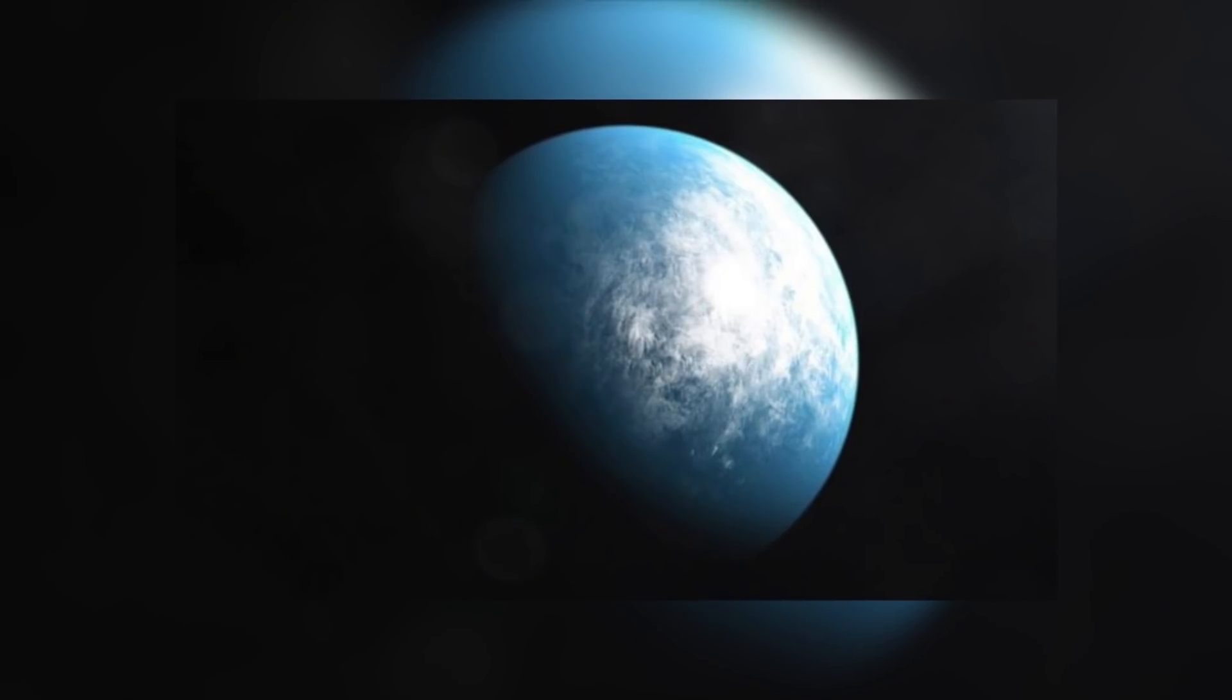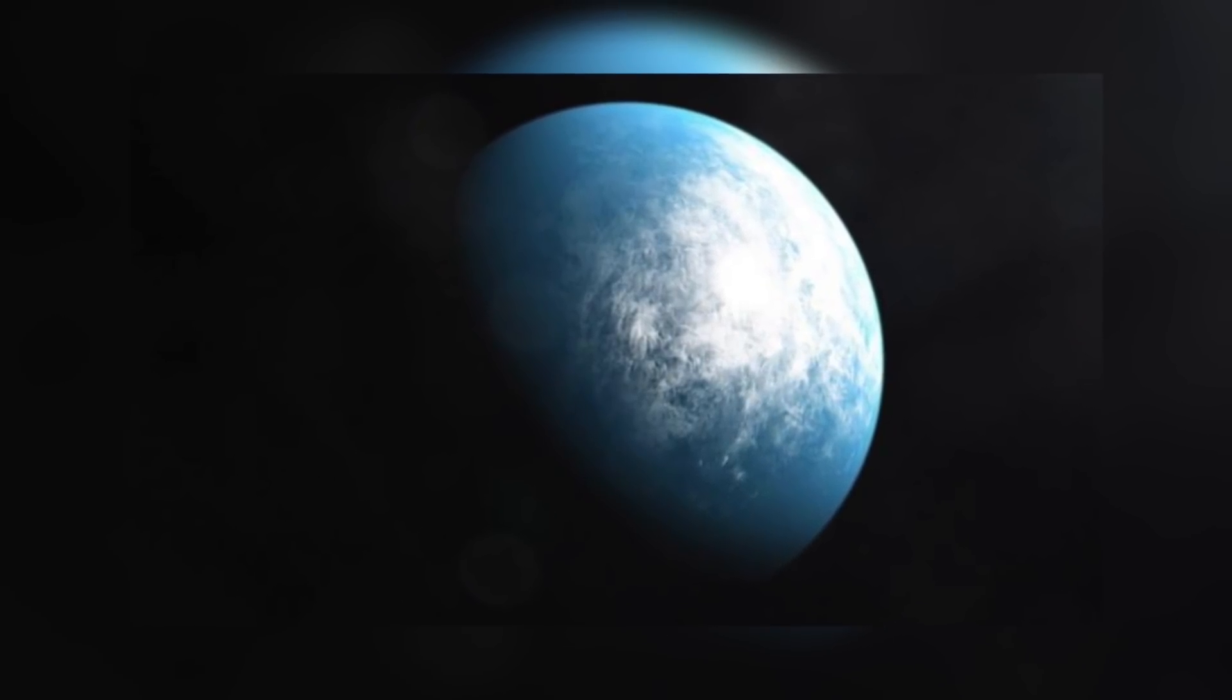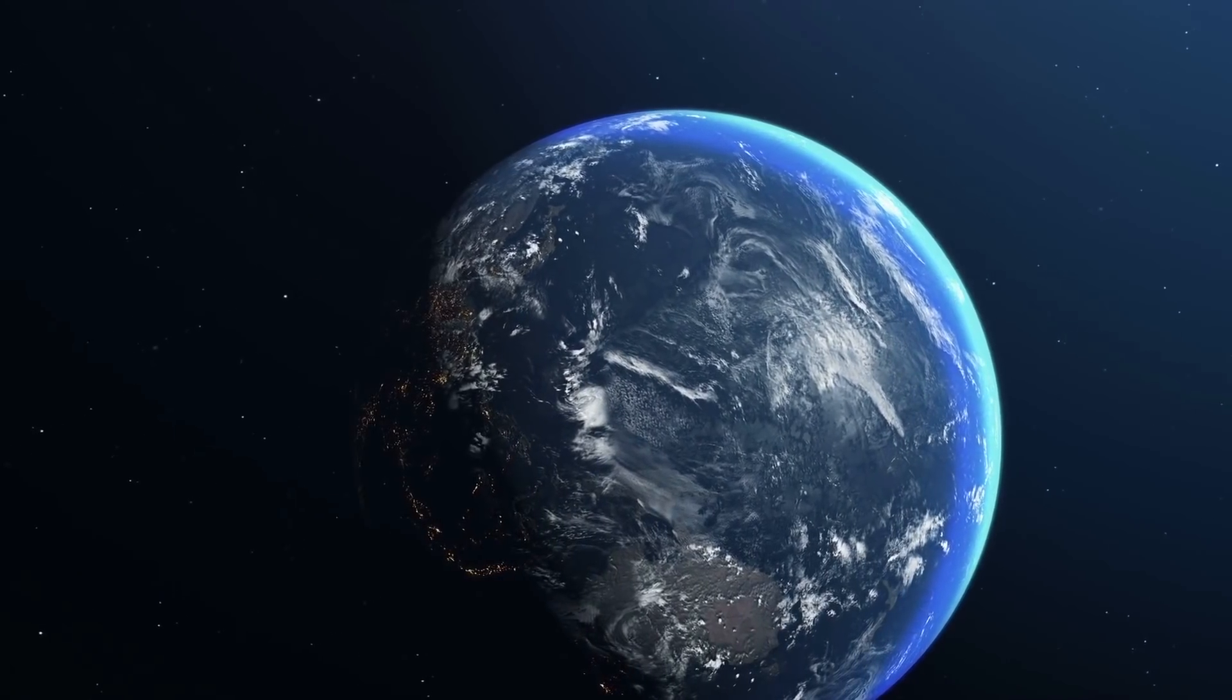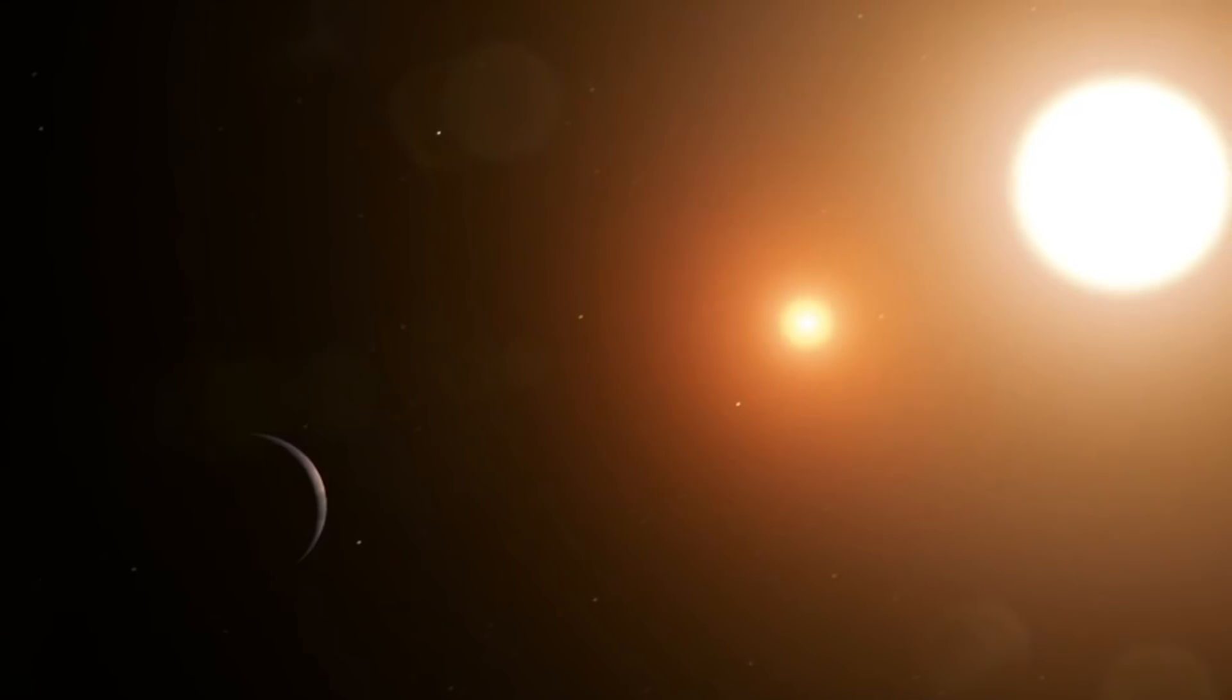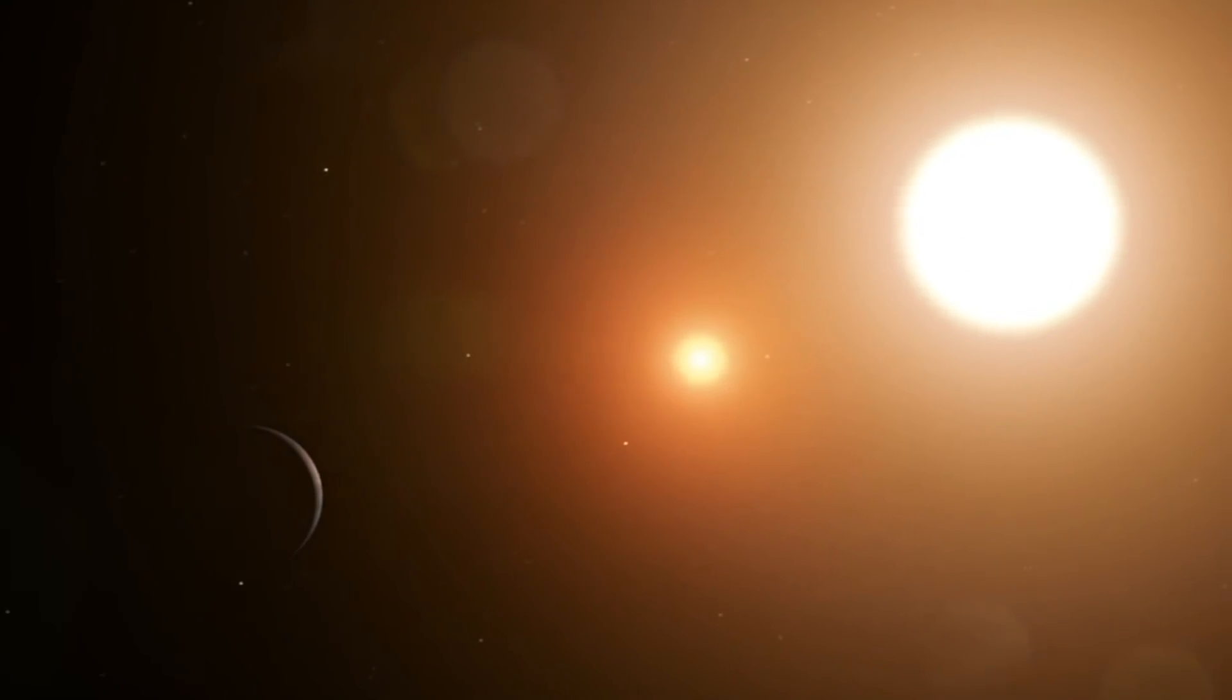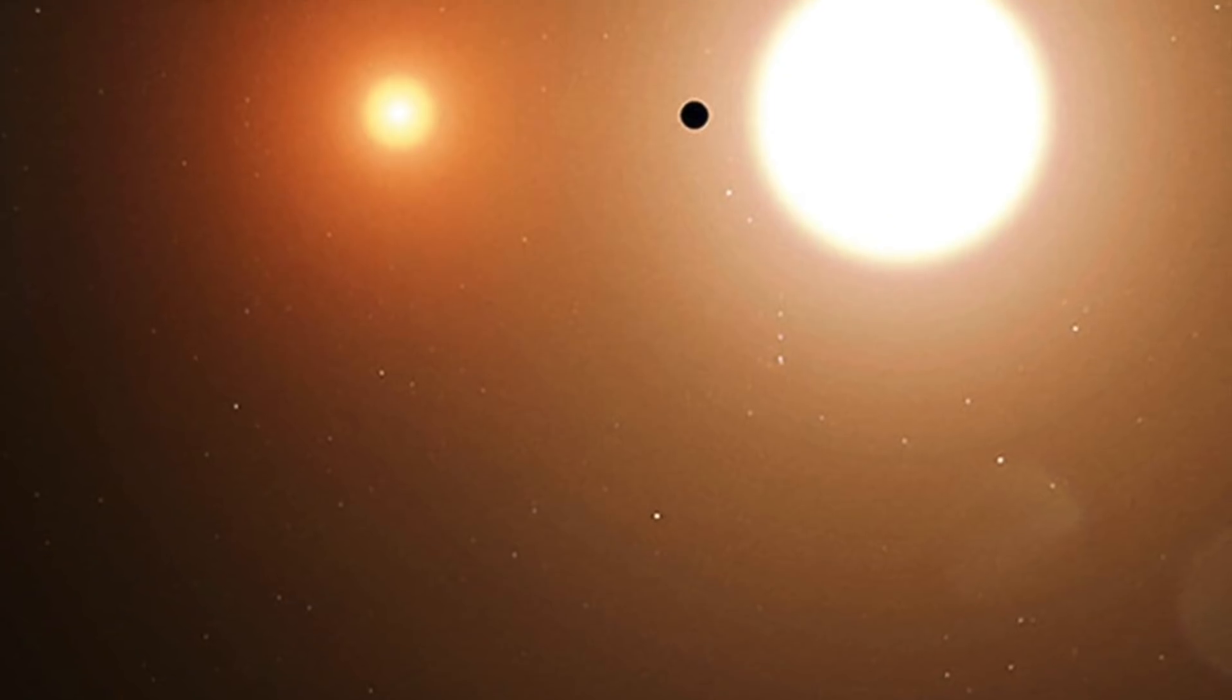He discovered the planet TOI, or Test Object of Interest, 1338, which is located 1,300 light-years away from the Earth. The special feature? The planet orbits two suns. Normally, planets orbit only one other celestial body. In any case, the guy has every reason to show off. There is now a planet called Wolfsukir.